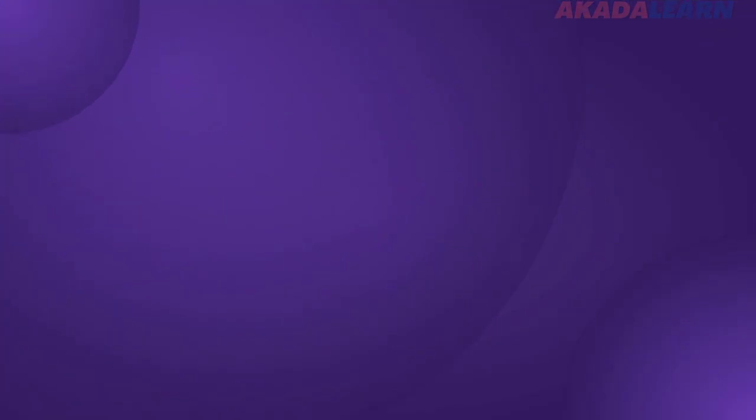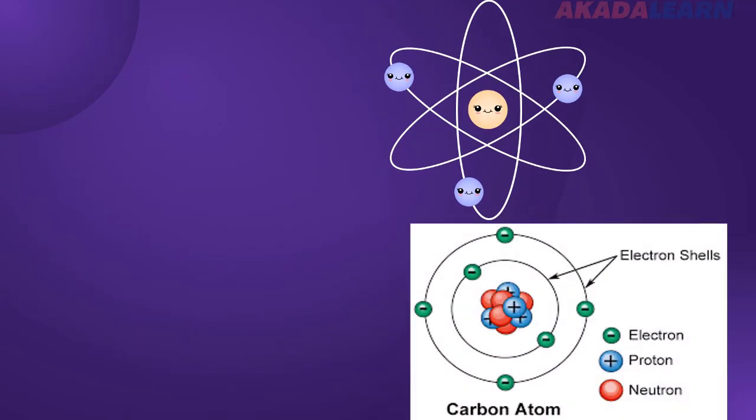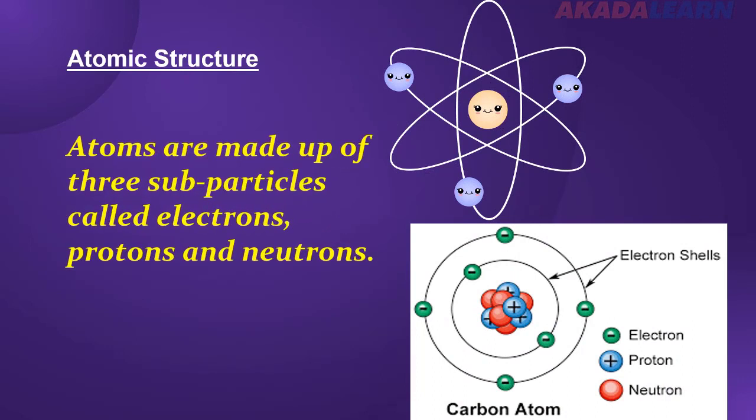So now, what is the structure of the atom? How does it even look like? The atom looks like the solar system, with the core, the center, called the nucleus, where the protons and the neutrons reside, while the electrons are revolving around that nucleus. This means that the atom has three sub-particles, called the electrons, the protons, and the neutrons.